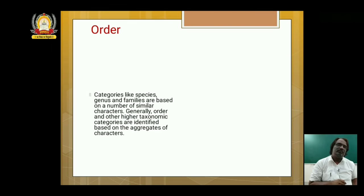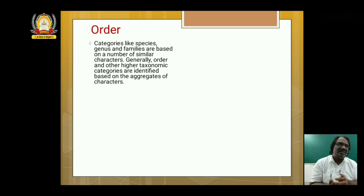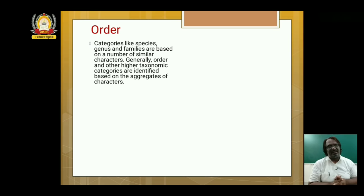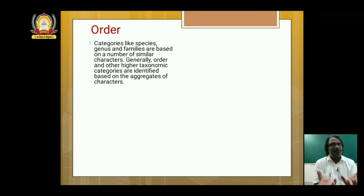Above family comes order. In order, different families come together. Categories like species, genus and family are based on a number of similar characters. Generally, order and other higher taxonomic categories are identified based on an aggregate of characters. Different families join together in an order because family A and family B are different families, but they have similar characters so they come together in an order.